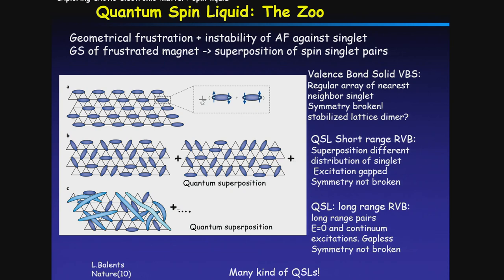Knowing that quantum fluctuation stabilizes the singlet state, you might consider what could be the ground state. The easiest is to place singlet pairs regularly on top of the lattice — forming a lattice of spin-singlet pairs. This situation is called a valence bond solid (VBS). 'Solid' means these spin-singlet pairs occupy specific sites, forming a lattice — that's why we call it valence bond solid, often written as VBS state. Apparently in this state you are breaking symmetry.